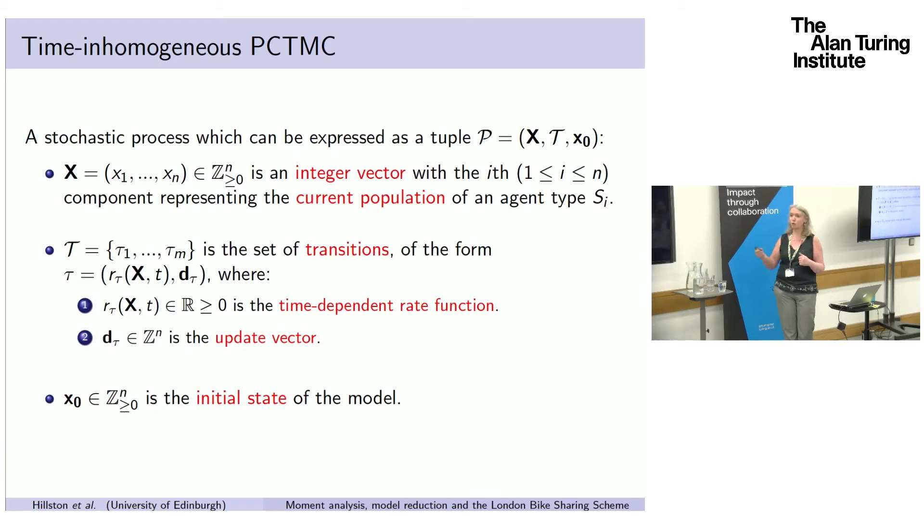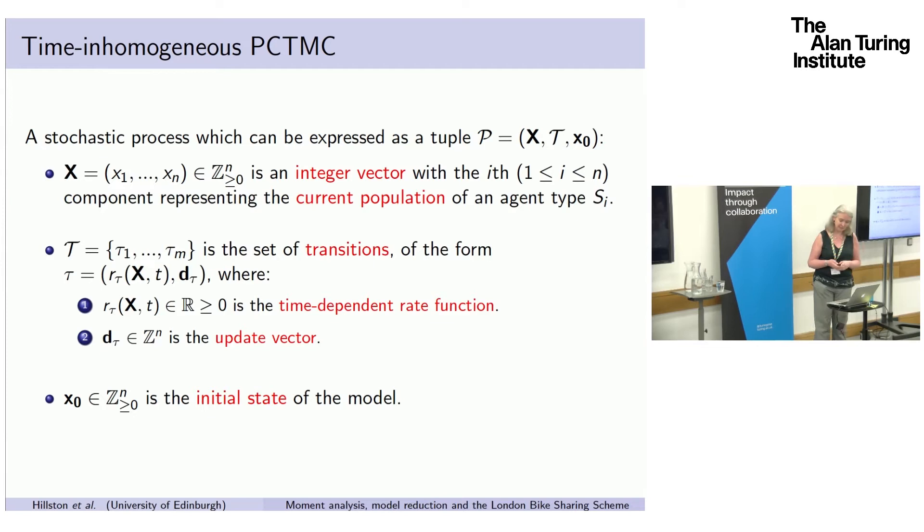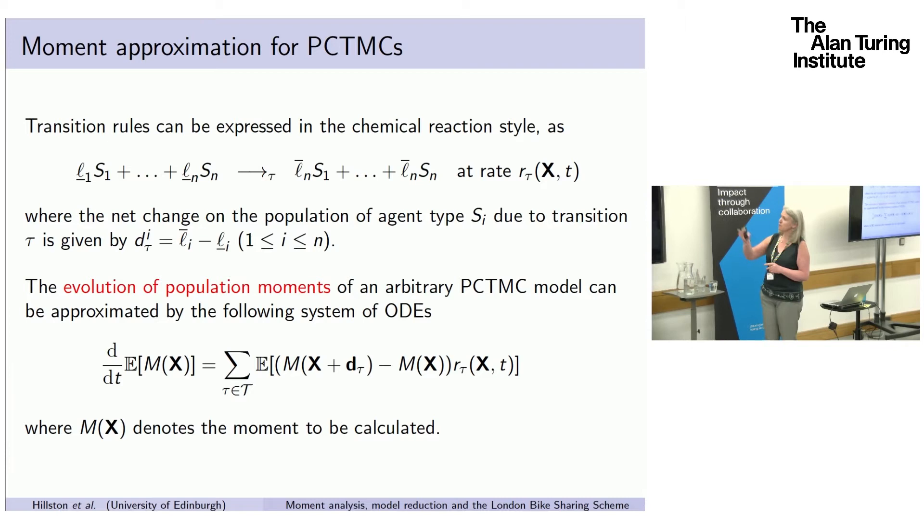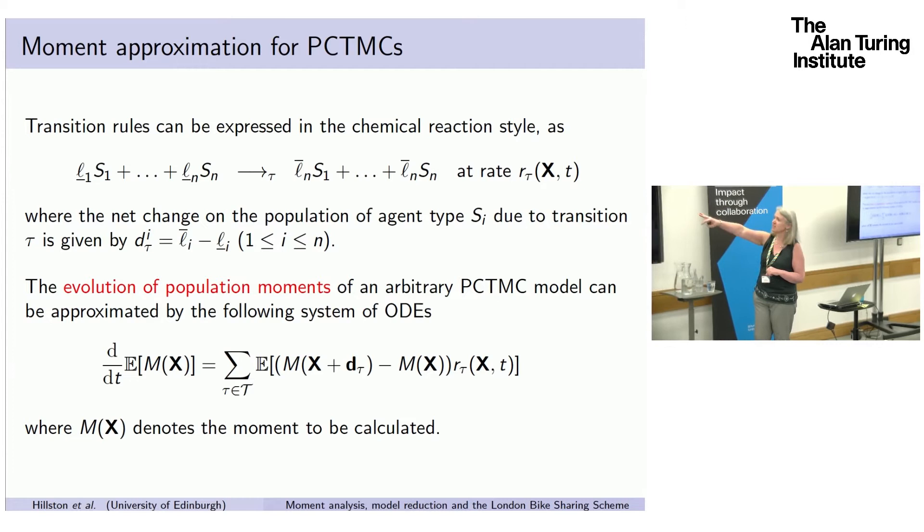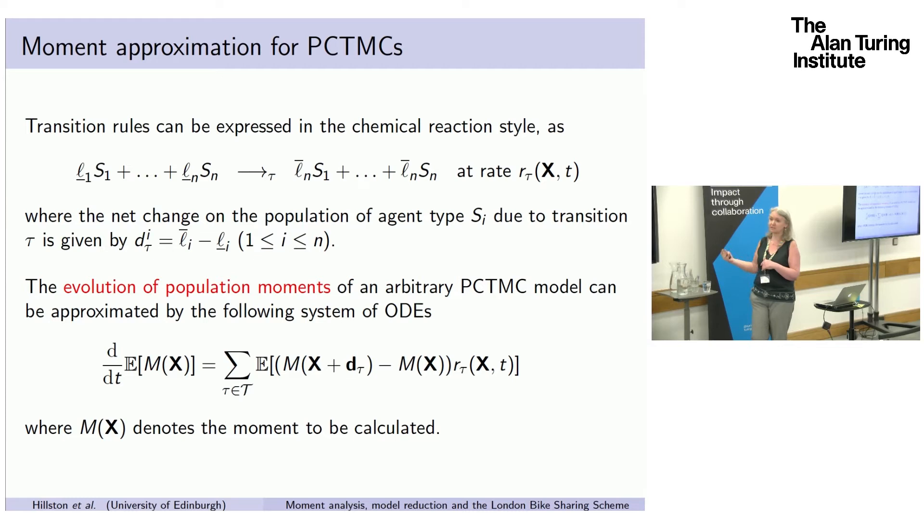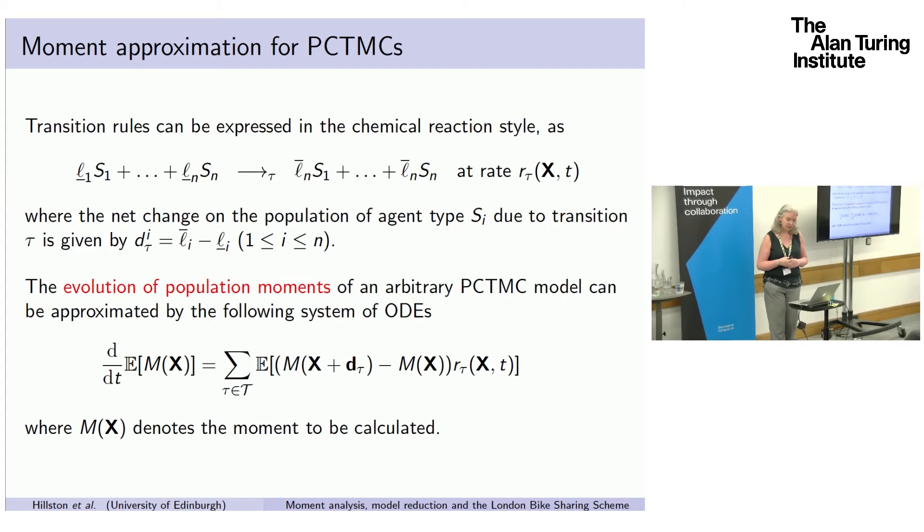We write it down in a chemical reaction style. Because we're computer scientists, we always like to have a nice written form of our models. We do it in this chemical reaction style, which says the things on the left go into the interaction or the action and produce the outputs on the right. That update vector is just the difference between the number that went in and the number that came out. Then we can look at the evolution of the moments of the population with a straightforward moment equation. We can then approximate the evolution of the PCTMC in terms of these moment equations.